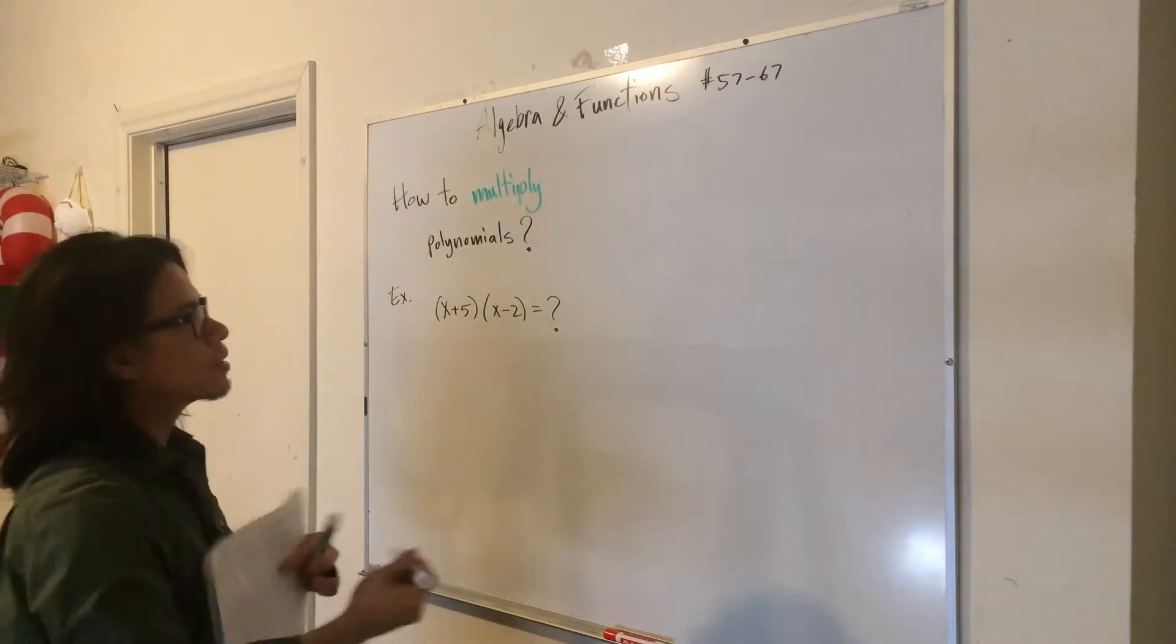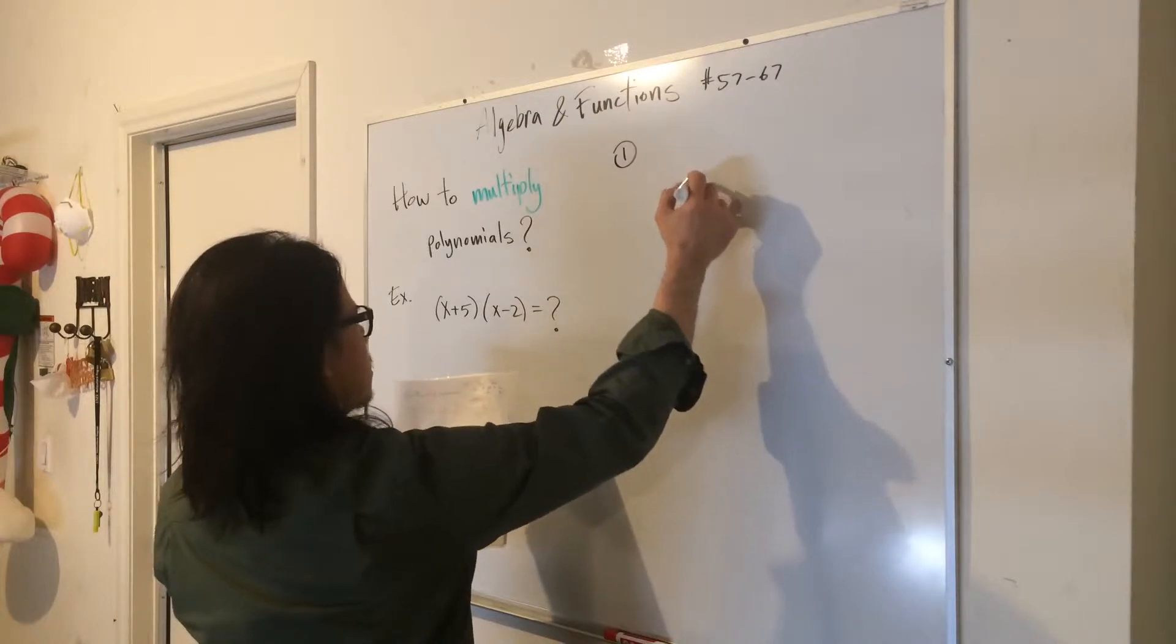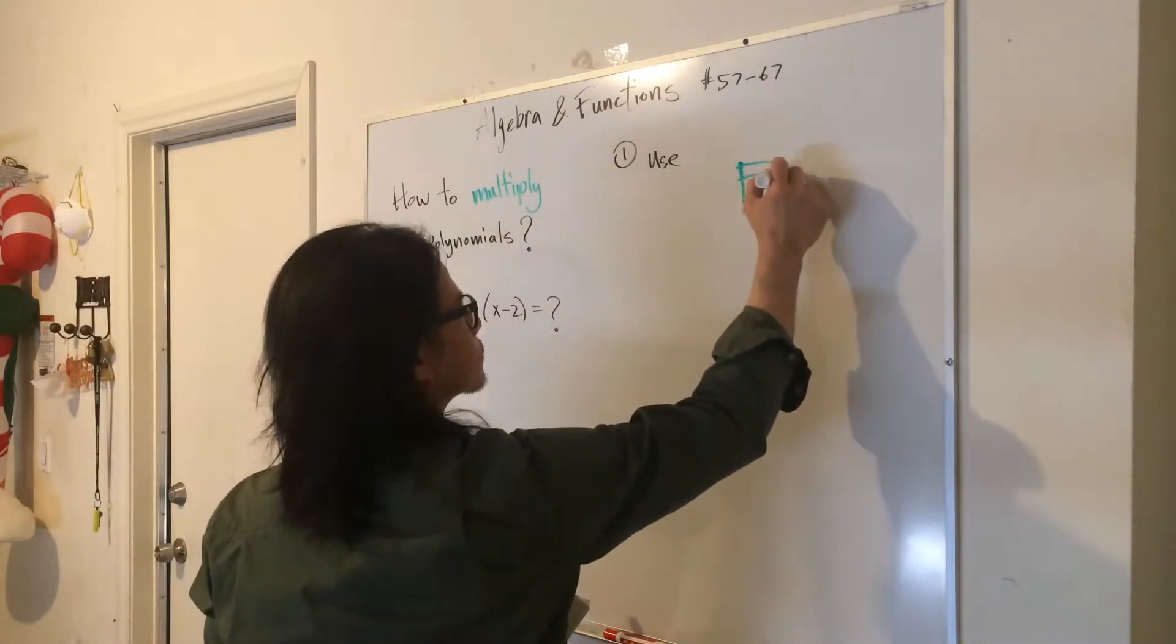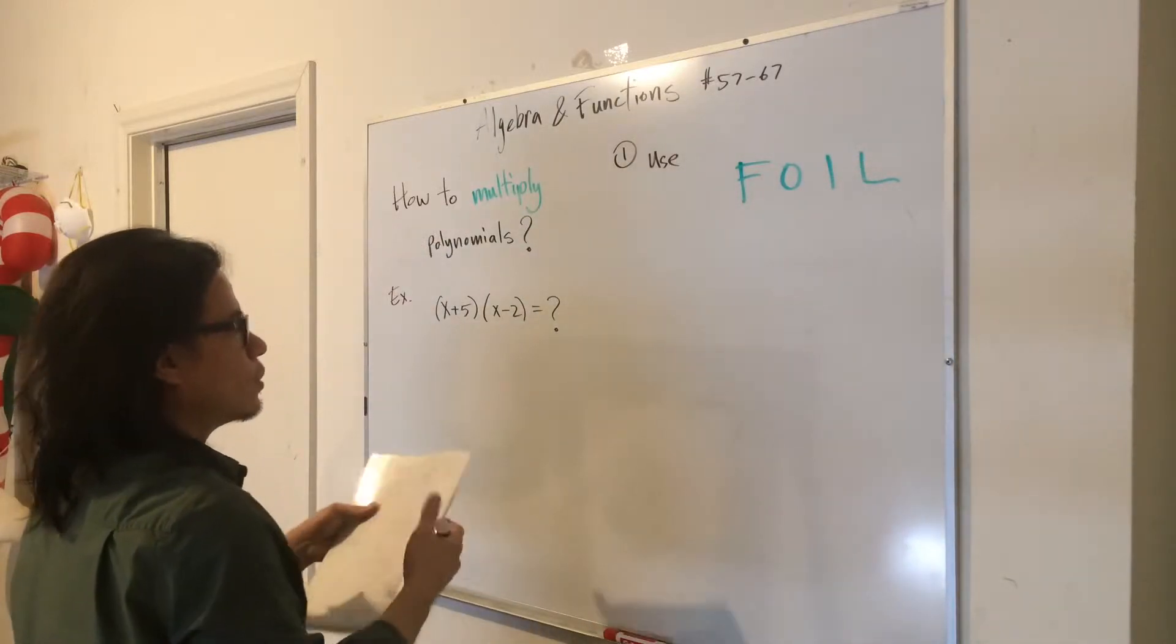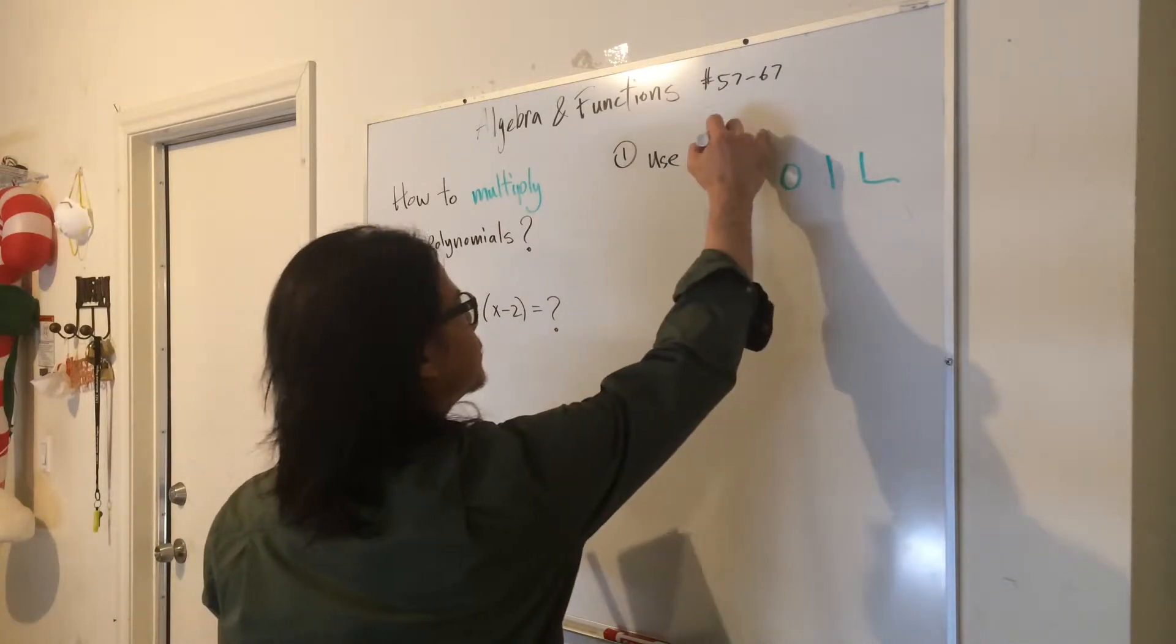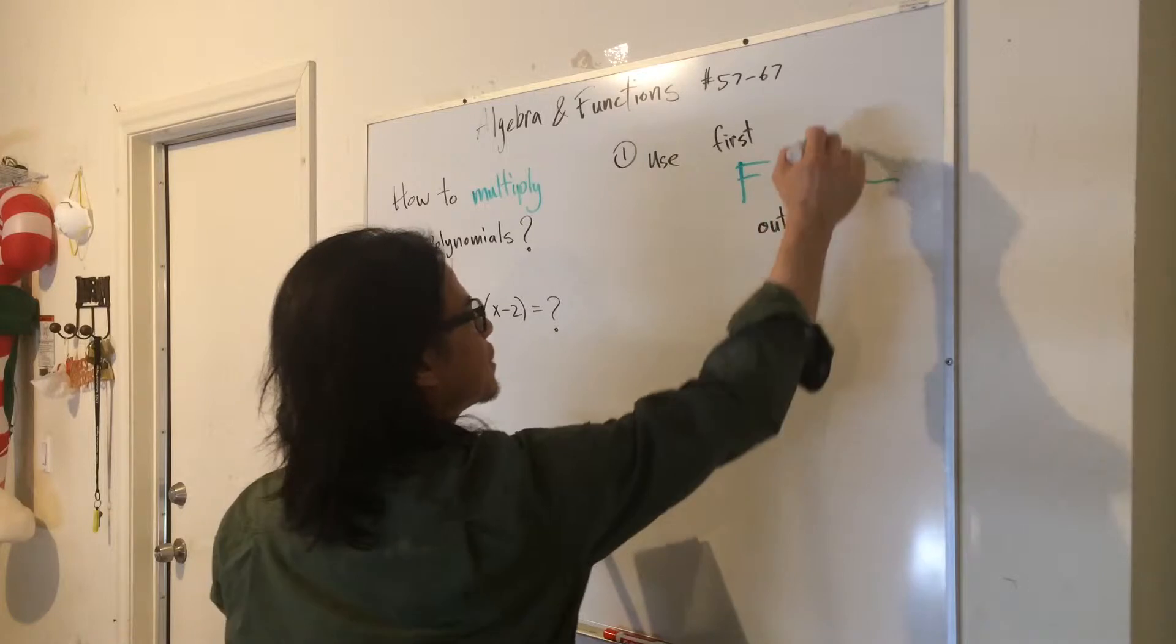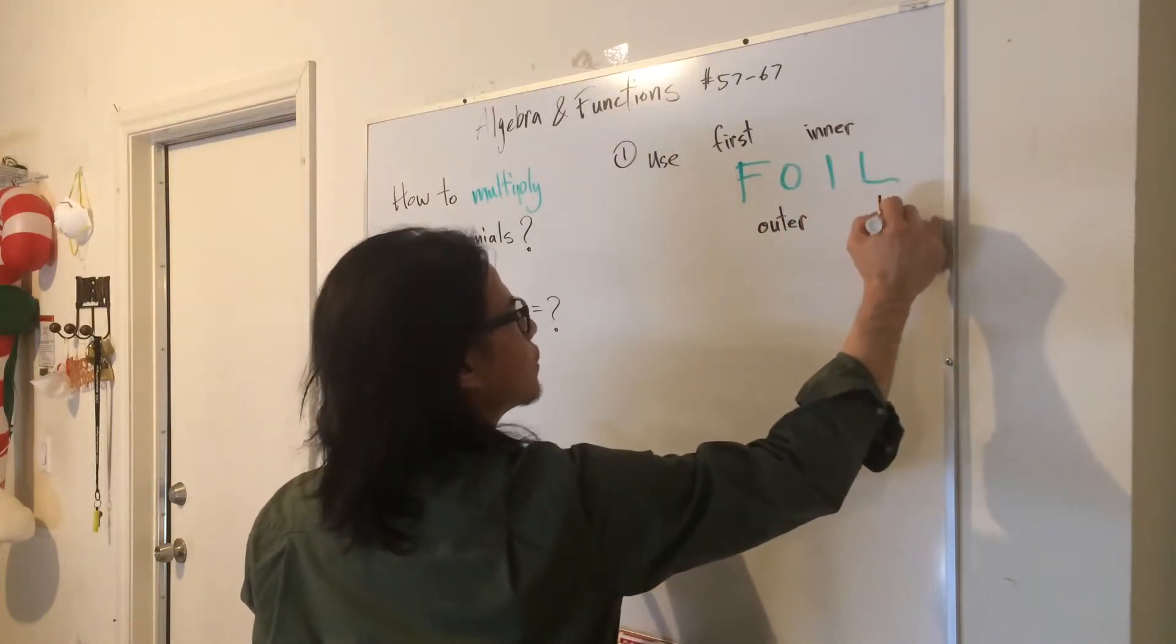In order to do this, we need to know how to work with a method called FOILing. So we're going to use FOIL. And what FOIL is, we're going to take the first term—the F stands for first. The O stands for outer. The I stands for inner. And the L stands for last.